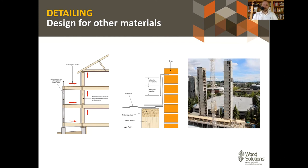Engineers must also consider designing with other materials. Steel balconies don't shrink like timber but move for different reasons — if the differential movement isn't accounted for, water may drain back toward the building, requiring exaggerated falls, screeds, or build-ups. Flashing should be used to deflect water away from timber. For buildings with concrete cores — as at Brock Commons — it's important to understand the different movement characteristics of concrete versus timber, since timber prefabricated to millimetre precision must interface correctly with the concrete on site.